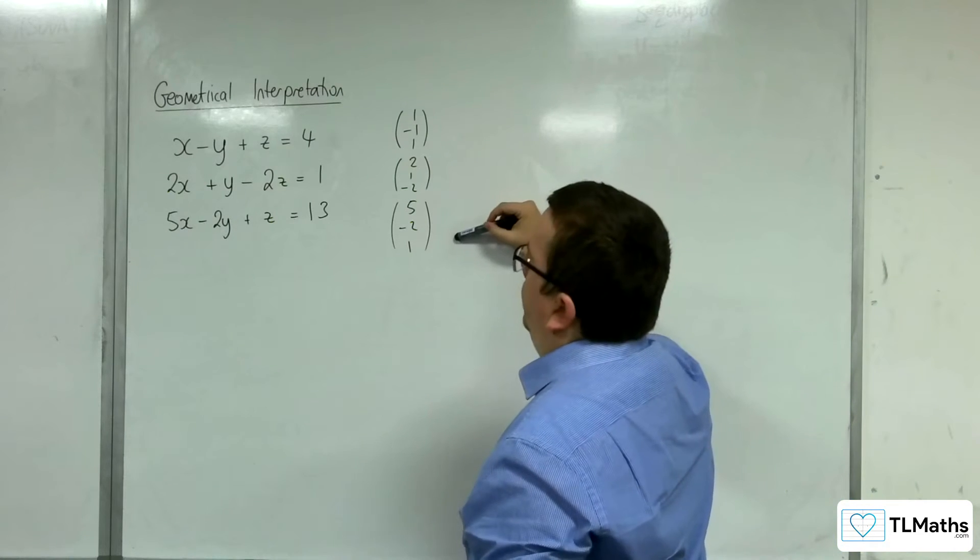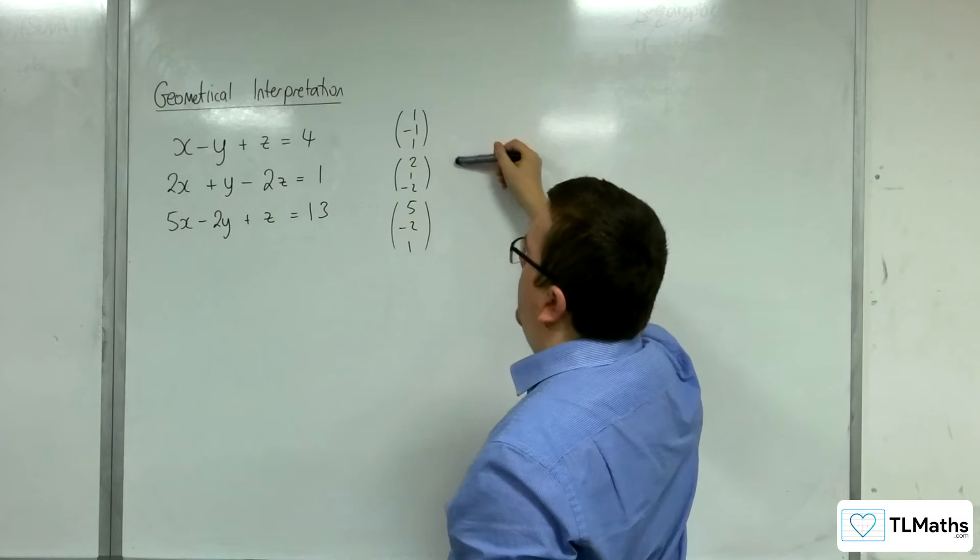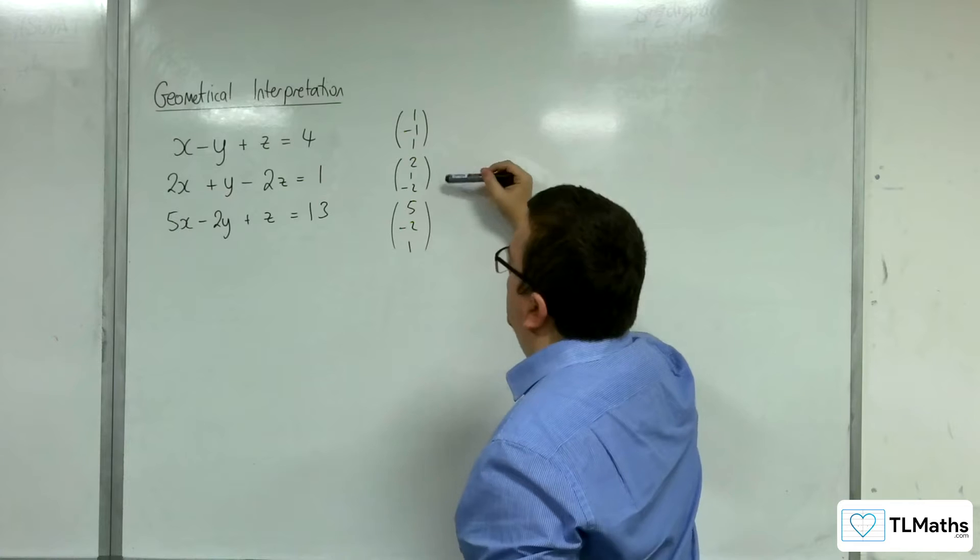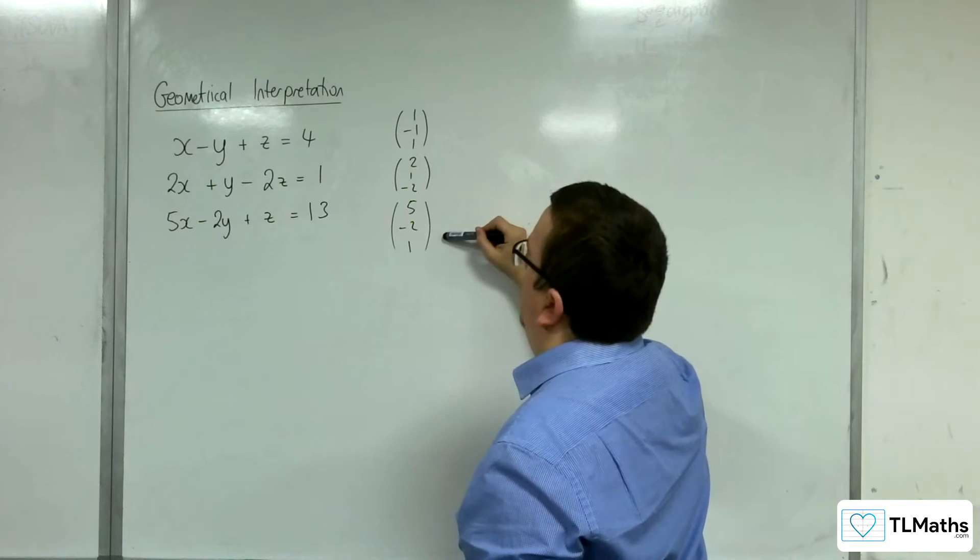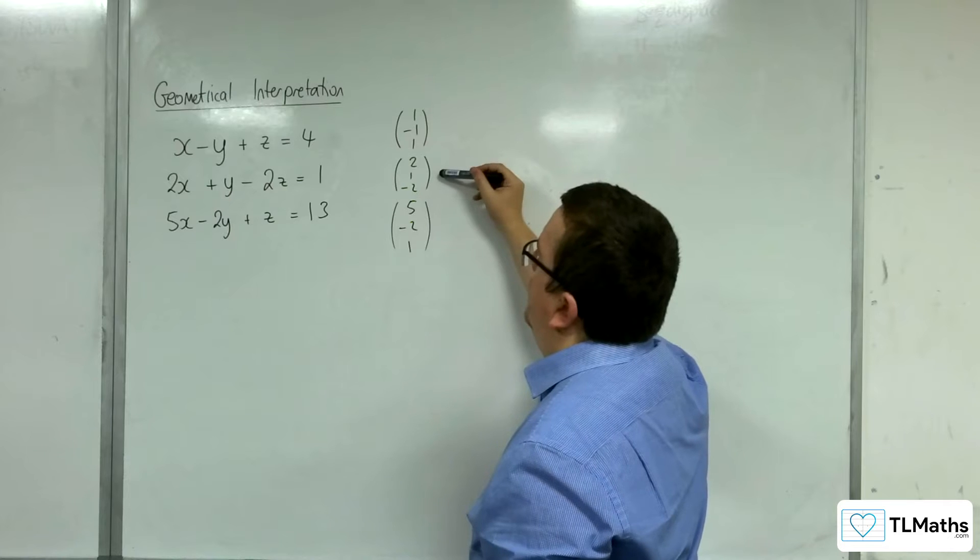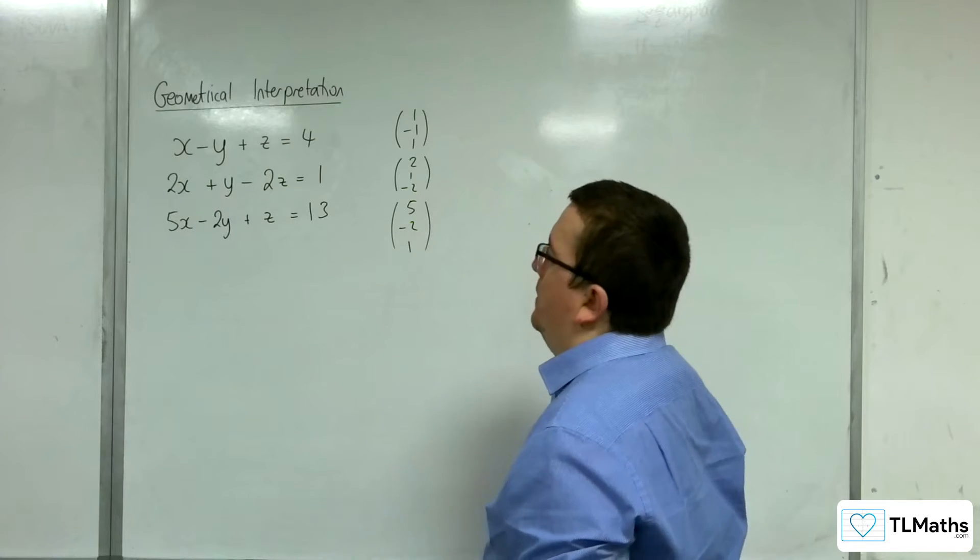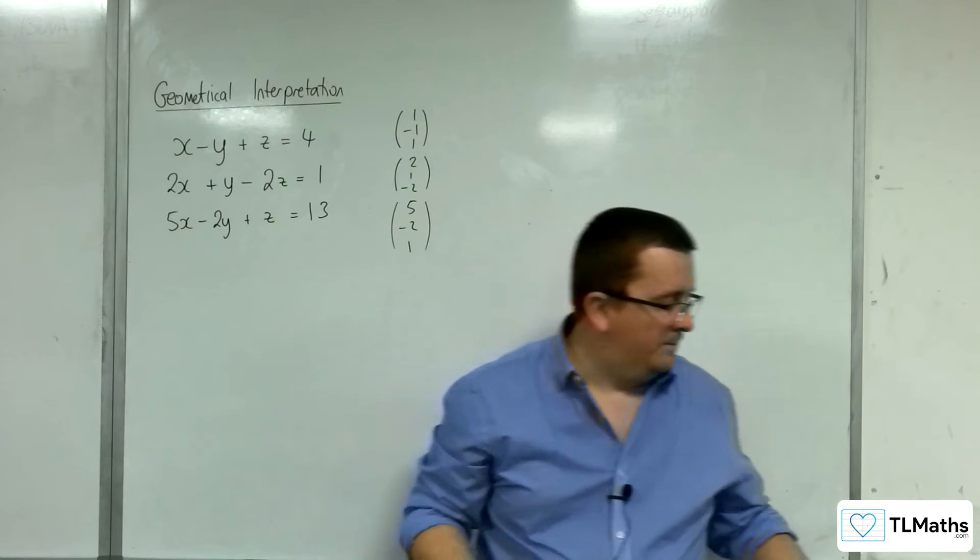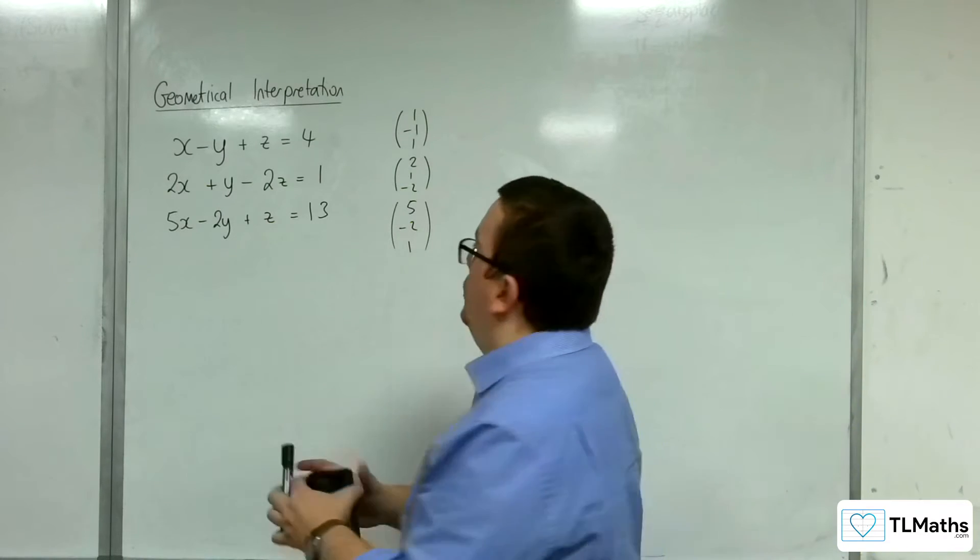Now, are any of these multiples of one another? You'd have to multiply that one by 2 to get that one, so that's not quite right. To get that one, you'd have to multiply it by 5, but that's not going to work. To multiply that one by 2 and a half, but that's not going to work either. So that means that they're not parallel to one another. So that's a quick check that we can do initially.